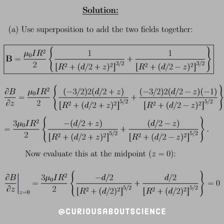All right, we already found what the field was before, so now we'll just modify it and use superposition to add the two loops together.